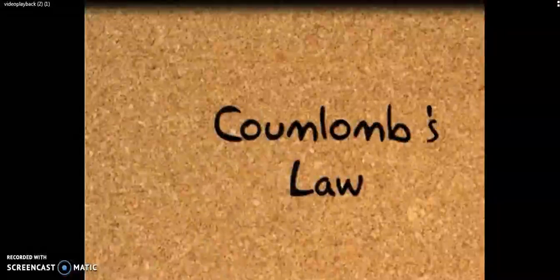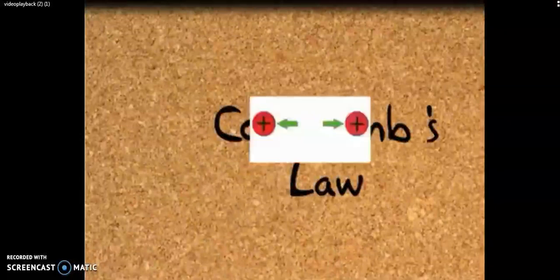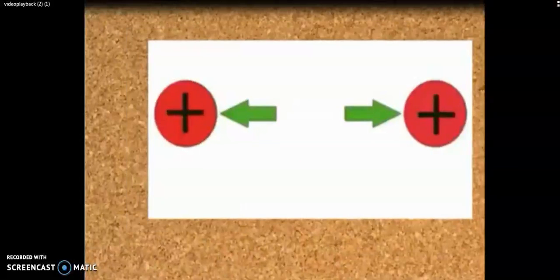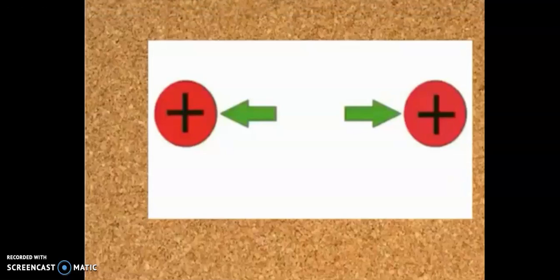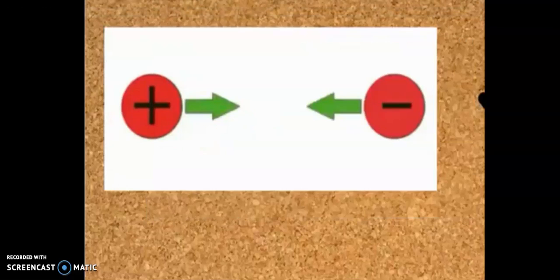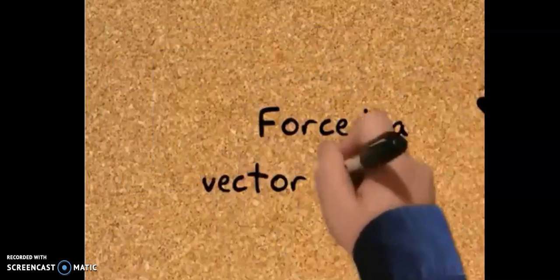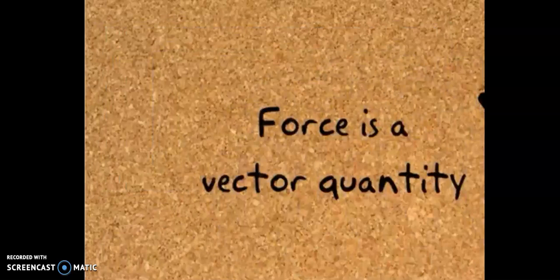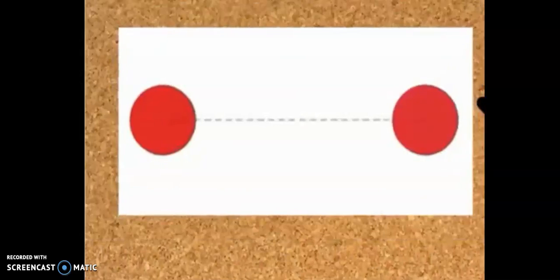In this session we will discuss Coulomb's law. According to this law, if the bodies are charged by similar electrical charge they will repel each other. If the bodies are charged by opposite charges they will attract each other. Force is a vector quantity, which means it has direction in addition to magnitude. The force acts along the straight line joining the centers of the charged bodies.